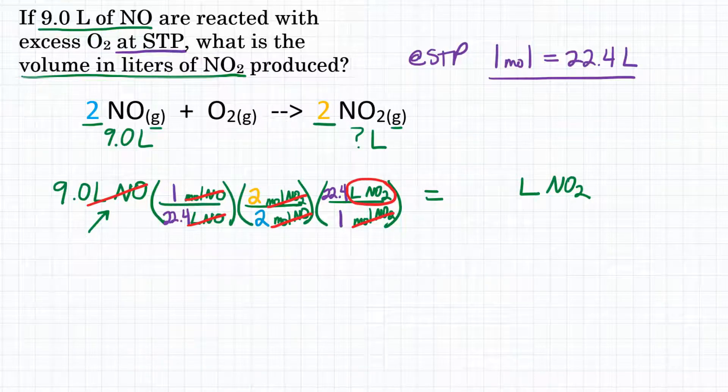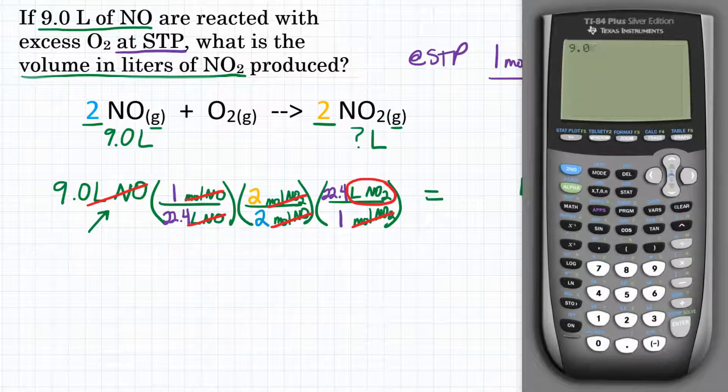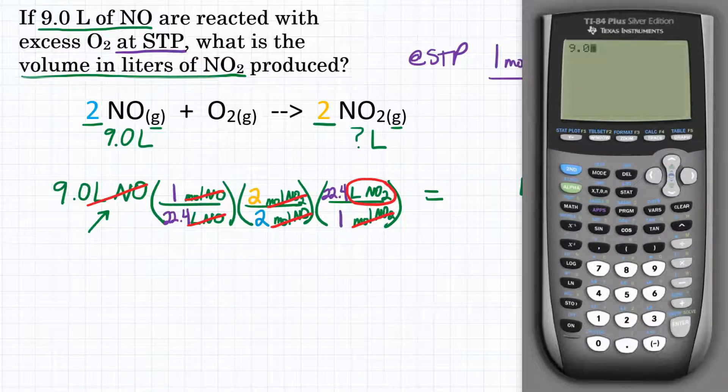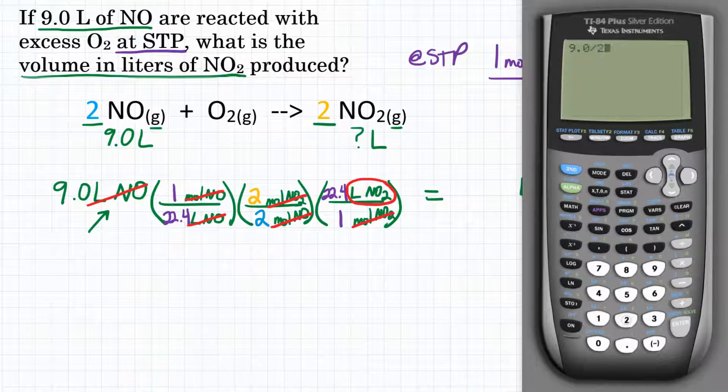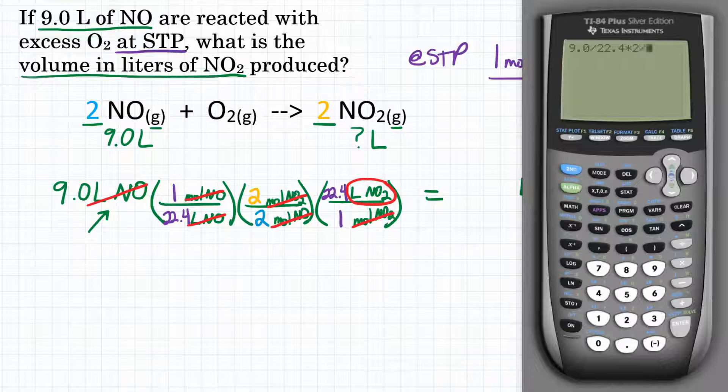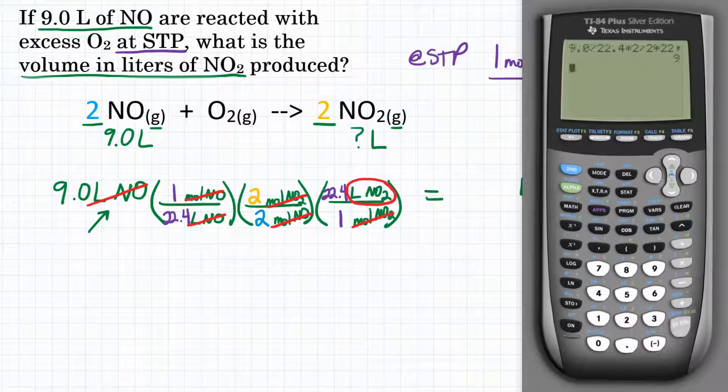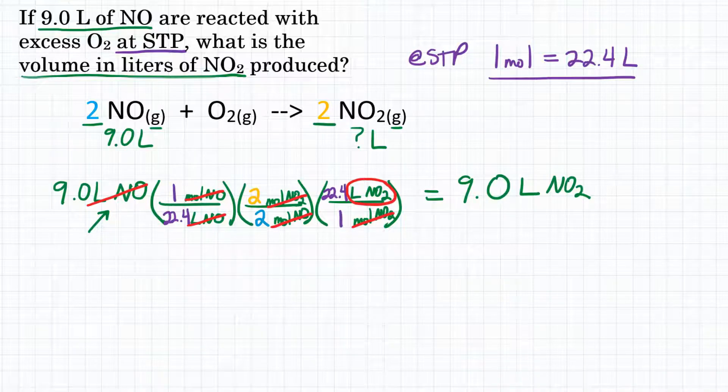So now we can do the math here. If we bring out our calculator, we are going to start with 9.0. We will multiply by the top and divide by the bottom of each conversion factor, skipping ones because they won't change our answer. So we will divide by 22.4, then multiply by 2 and divide by 2, and then lastly multiply by 22.4. Hit equals and we get 9. Looking at significant figures, we would have 2, so that would be 9.0. So our final answer would be 9.0 liters of NO2.